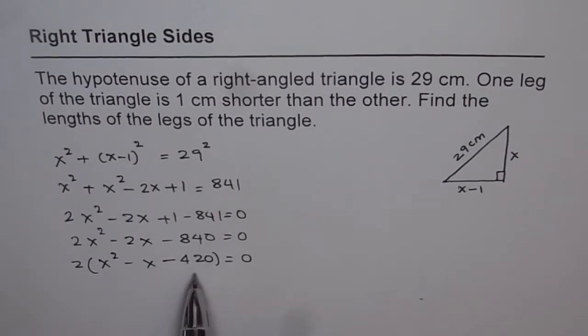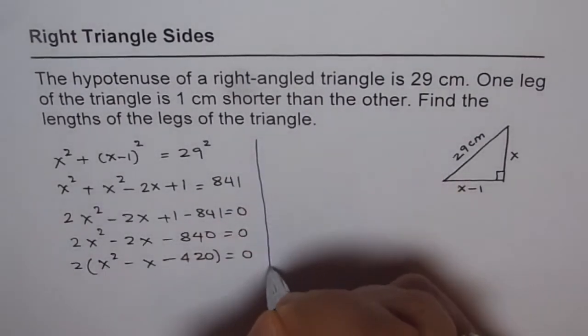Now this term can be either factored or we can apply quadratic formula to get the answer. Now 420 can be factored as 21 times 20. 20 times 20 is 400. We can actually factor it using product and sum.